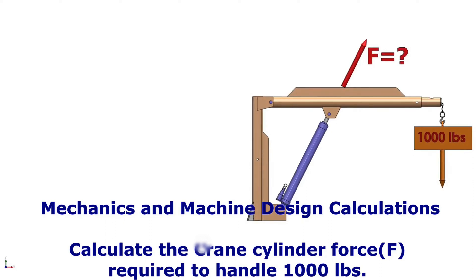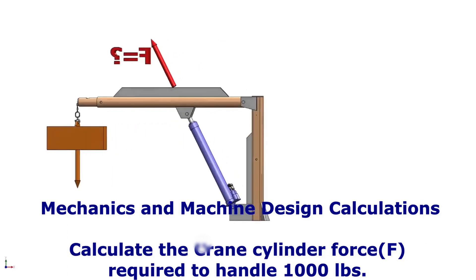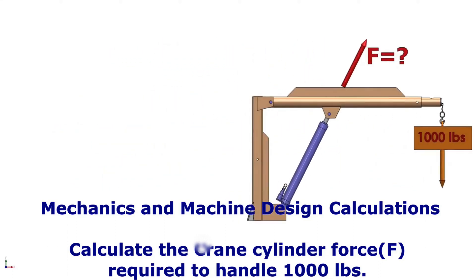Question: Calculate the cylinder force F required to handle 1000 pounds. The crane's arm is a rigid element with negligible mass.